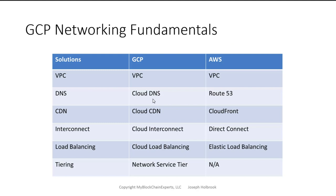Cloud DNS is Google's managed cloud service — it's the only cloud service that really has essentially a guarantee of five nines. Cloud CDN is handled differently than CloudFront. Think of the VPC as a global resource and not regional. In AWS, it is a regional service, so just be aware of that.